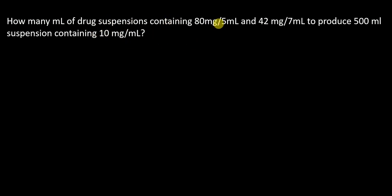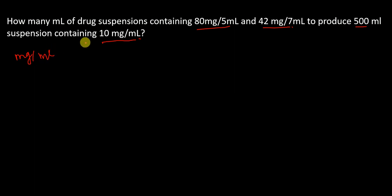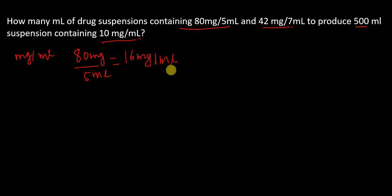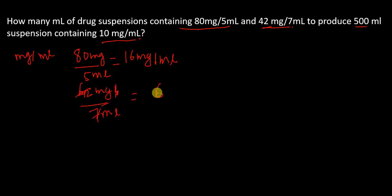The next example: how many ml of a drug suspension containing 80mg per 5ml and 42mg per 7ml is required to produce 500ml of a suspension containing 10mg per ml? First, convert everything to mg per ml. 80mg per 5ml divided by 5 gives 16mg per ml. And 42mg per 7ml divided by 7 gives 6mg per ml. So 16mg per ml is the higher concentration and 6mg per ml is the lower concentration.